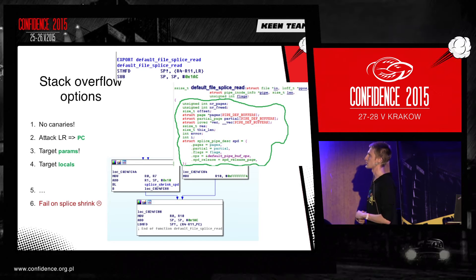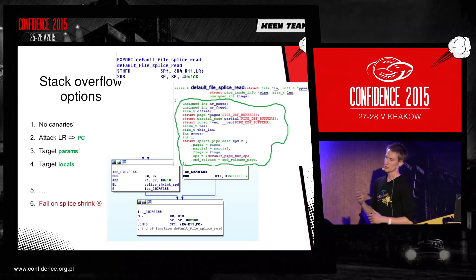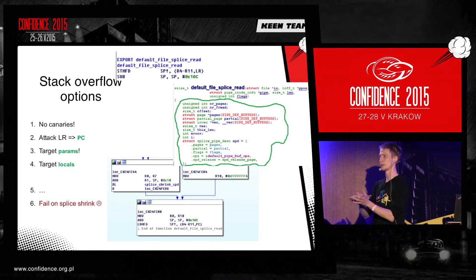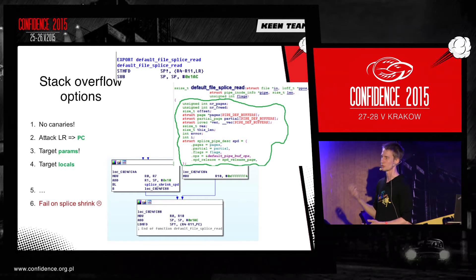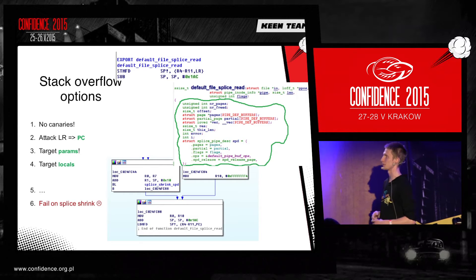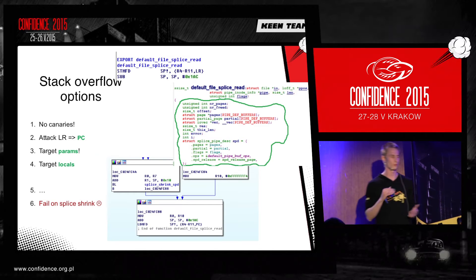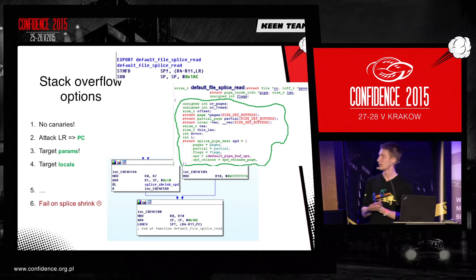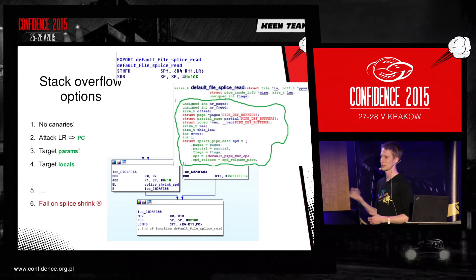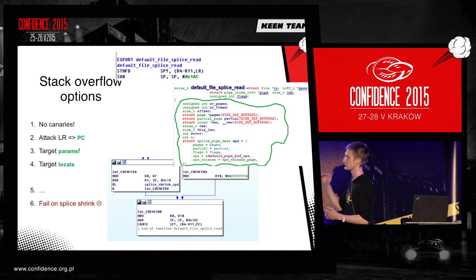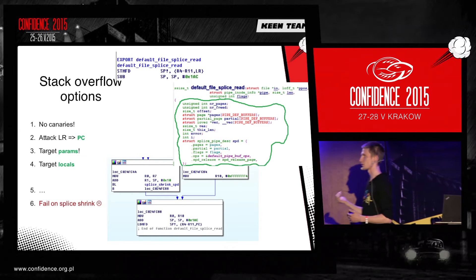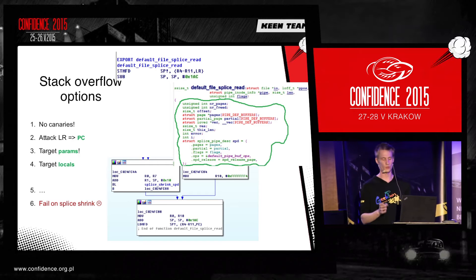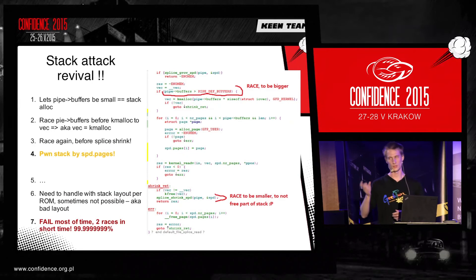One limitation is that we overflow with some pattern — a kernel pointer to our data and the size. The second issue is that in Android, you have plenty of ROMs. That means when you implement an exploit for one ROM, the stack looks totally different on another ROM, because it depends on how it's compiled, some defines, et cetera. When you attack the stack — which is possible because there are no canaries in the Linux kernel on Android in this function — you can target the return pointer, or params or local variables. But every time you target different ROMs, you have to specify, because the stack looks different.